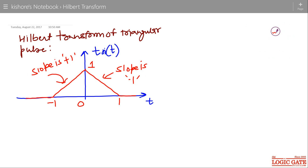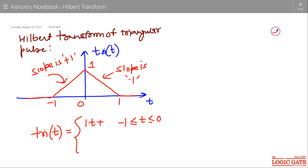If I write the expression for this triangular pulse: from minus 1 to 0, it is a straight line with slope plus 1 and intercept on the vertical axis plus 1, so it is t plus 1. From 0 to 1, it is again a straight line with negative slope minus 1, giving minus t, and intercept plus 1, so it is minus t plus 1. It is 0 otherwise. This is the expression for the triangular pulse.